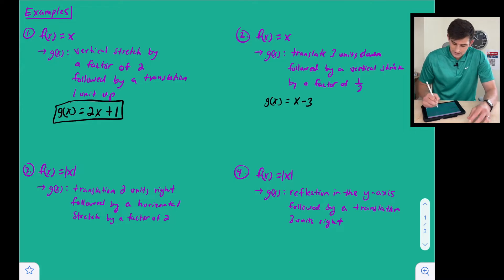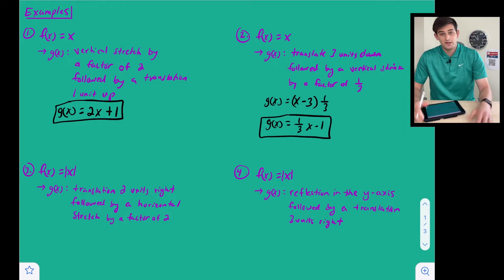But now what we want to do is take our entire x minus three and multiply it by one-third, because that's us performing this vertical shrink. So now we have g of x is equal to one-third x minus one, and that would be our final transformed function.